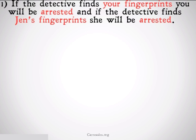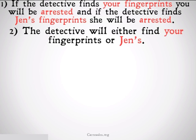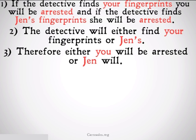Here are some examples. If the detective finds your fingerprints, you will be arrested. And if the detective finds Jen's fingerprints, she will be arrested — that's our first premise. The second premise is the detective will either find your fingerprints or Jen's. Those are the first parts of our two implications. And we conclude, therefore, either you will be arrested or Jen will be arrested.